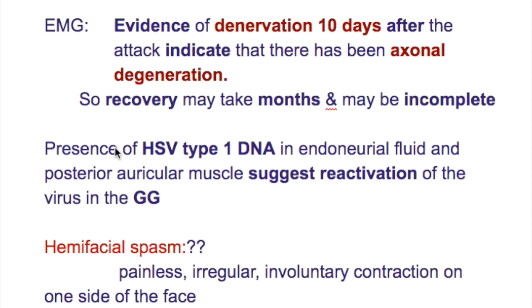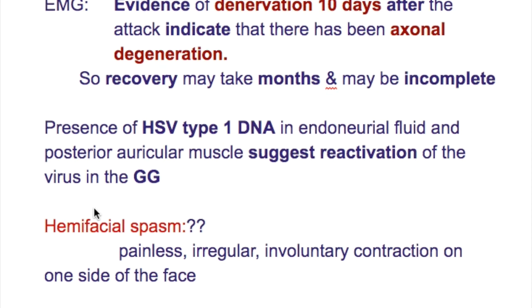A presence of herpes simplex virus type 1 DNA in endoneural fluids and posterior auricular muscles suggests reactivation of the virus in the geniculate ganglion.